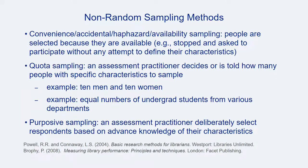Oftentimes in practical assessment, a sample of respondents or participants is selected because they're there. An assessment might happen using individuals in a space or at a particular event, or be distributed to those who are easy to access, separate from some other plan for sampling. These samples can be called a variety of terms: convenient samples, accidental or haphazard samples, availability sampling, and so on.